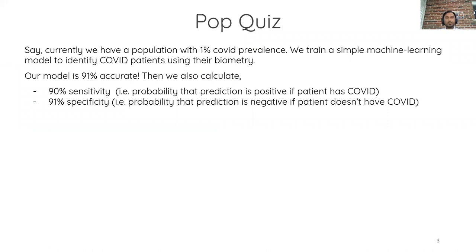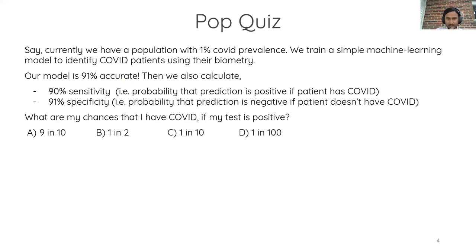Before we proceed, I wanted to start with a pop quiz. Given the current pandemic situation, I thought this would be interesting. Say we have a population with 1% COVID prevalence, and we train a simple machine learning model to identify COVID patients using their biometric data — a handful of variables. Our model is 91% accurate, with sensitivity of 90% and specificity of 91%. The question is: what are my chances that I have COVID if my test is positive? Feel free to pause the video and think about this.